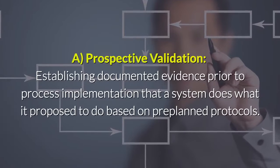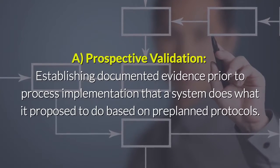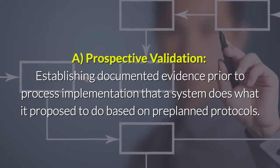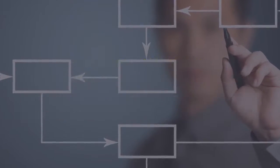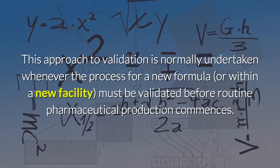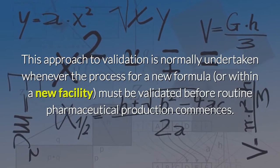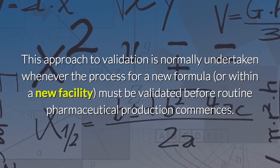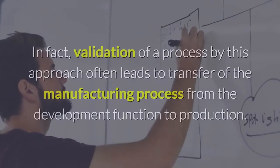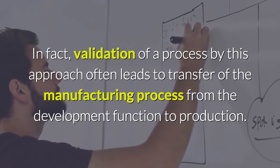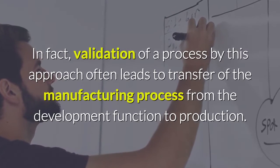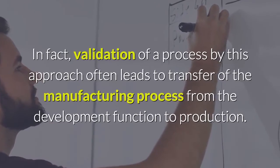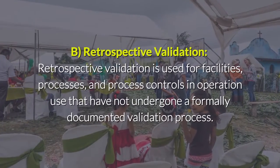Prospective validation establishes documented evidence prior to process implementation that a system does what it is proposed to do, based on pre-planned protocols. This approach is normally undertaken whenever a process for a new formula or within a new facility must be validated before routine pharmaceutical production commences. In fact, validation by this approach often leads to transfer of the manufacturing process from the development function to production.